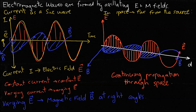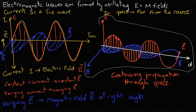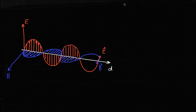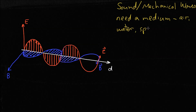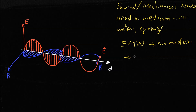Let's cut out this diagram for the next section and get rid of everything else. When we studied sound waves and mechanical waves we learned that they need a medium such as air, water, or springs to travel through — those waves are deformations of their mediums. But with electromagnetic waves, even though they travel through substances, they don't actually require a medium to travel in, so they can travel through a vacuum.